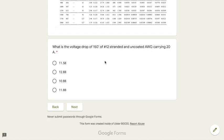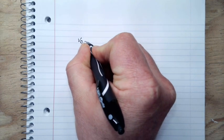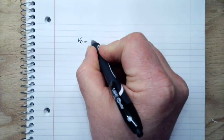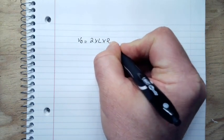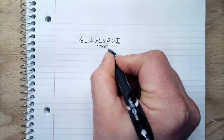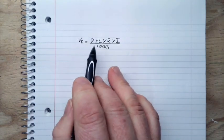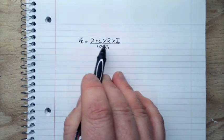The first thing we're going to need to know is the equation. Voltage drop, VD, is equal to 2 times L times R times I divided by 1,000. Again, that voltage drop is equal to 2 times the length times the resistance times the current divided by 1,000.